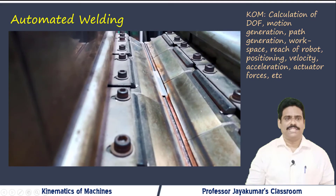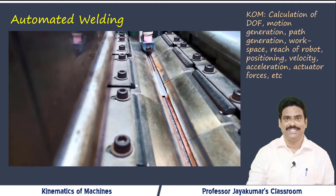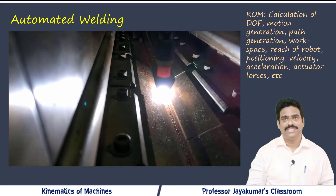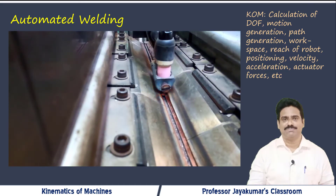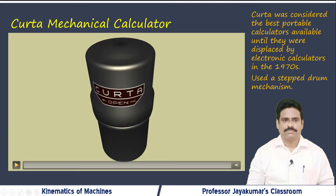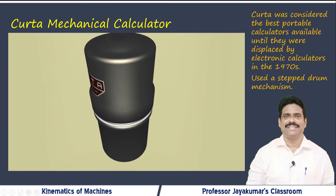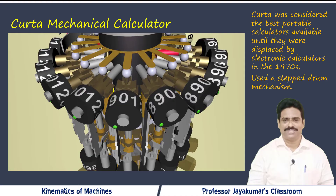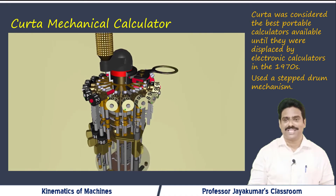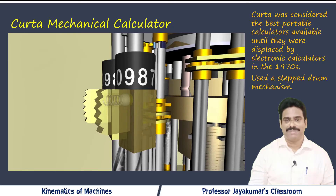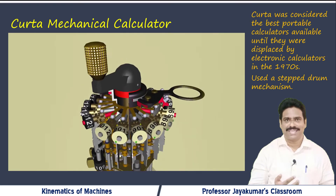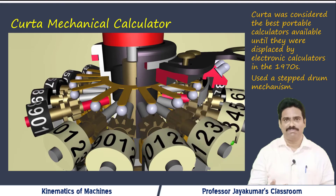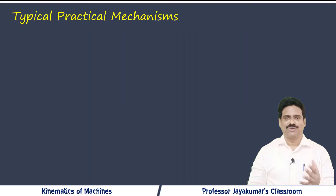Let us consider another application which is automated welding. A robot is being used for welding purposes. Even to design such mechanisms requires the concepts of Kinematics of Machines. This is a typical mechanical calculator which was used before the 1970s, before it was replaced by electronic calculators. These mechanical calculators used a fascinating stepped drum mechanism for calculation purposes. As you could see here, all these mechanisms transmit and transform motion.